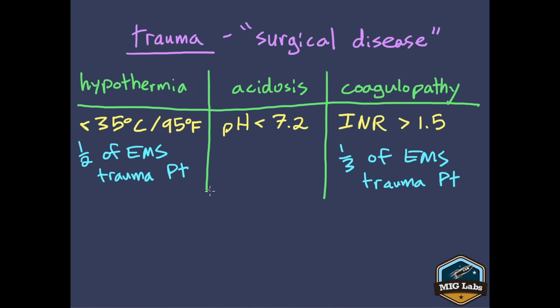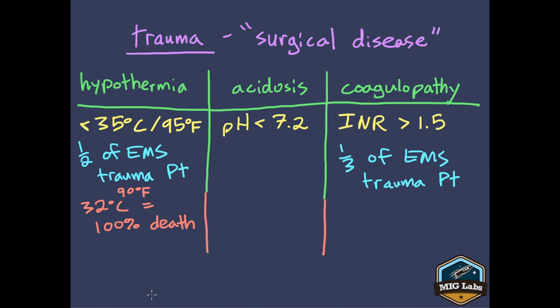There's even more bad news. Some studies showed that if a patient becomes 32 degrees Celsius or colder — about 90 degrees Fahrenheit — they had a 100% death rate. Every single patient whose core temperature dropped below 32 Celsius died. With coagulopathy, one study found that every single patient who developed extreme coagulopathy died as well — a 100% death rate for them too.